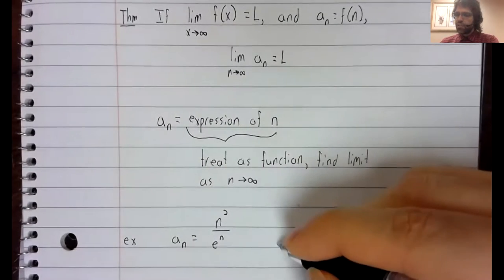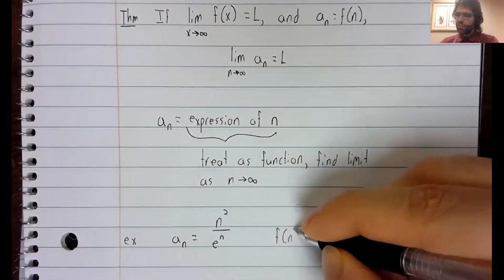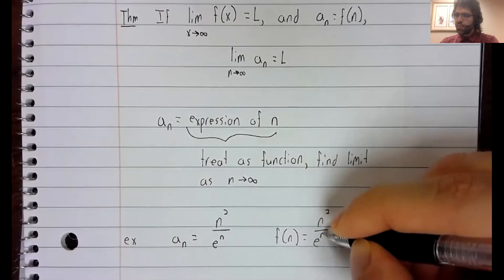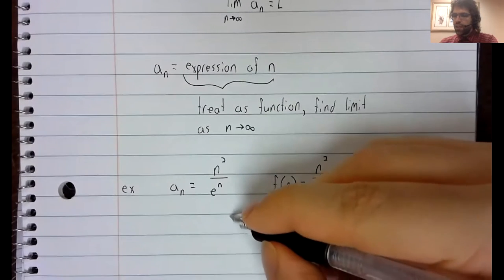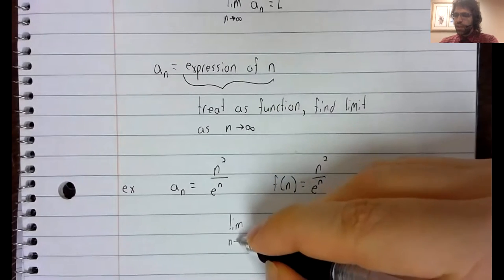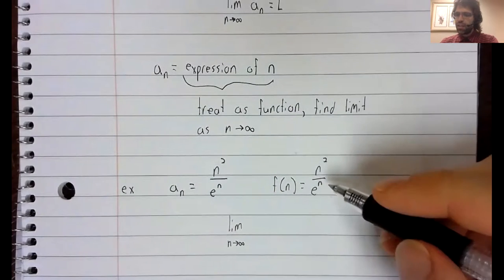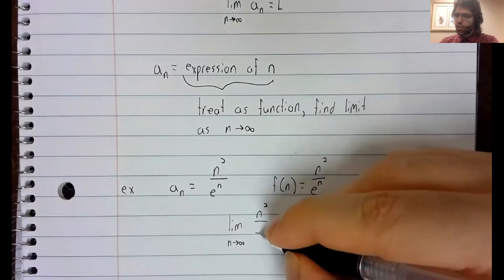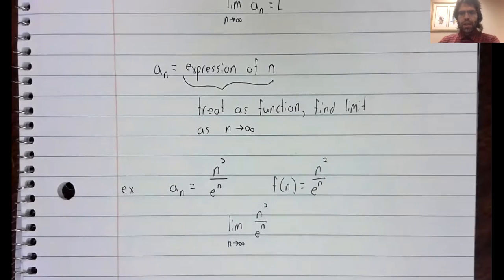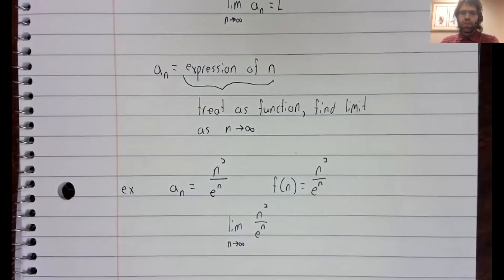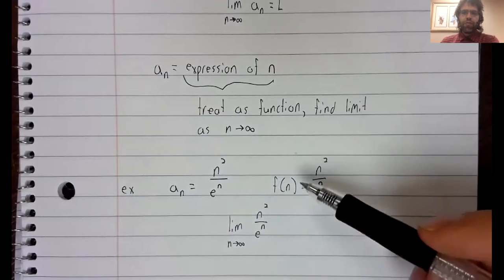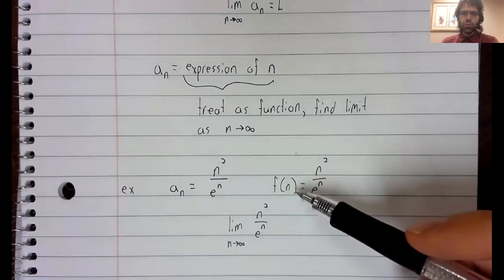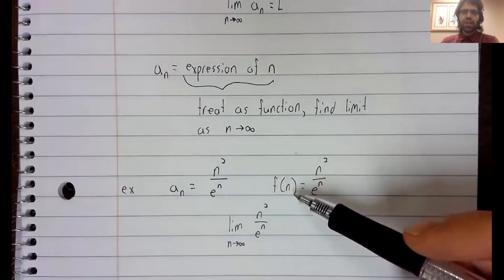This theorem says that we should think of this as a function, and then take the limit as n goes to infinity of this function. And the advantage of thinking of things in terms of functions is that for functions, we have a powerful limit finding tool, by which I mean L'Hopital's rule.